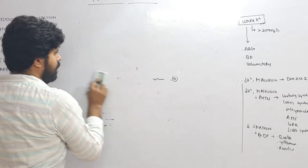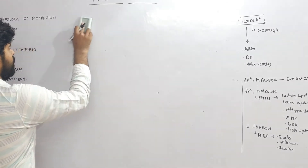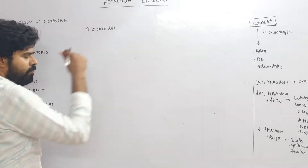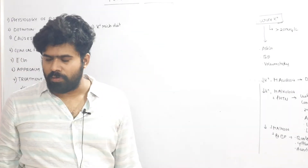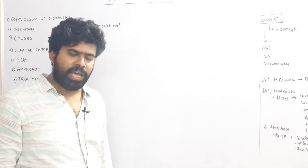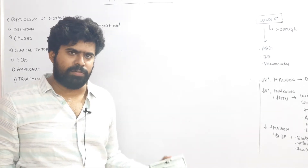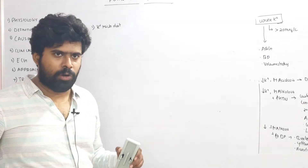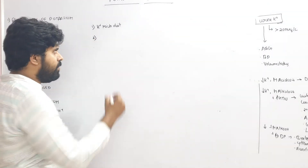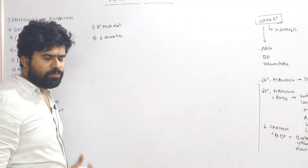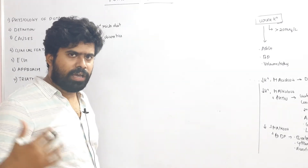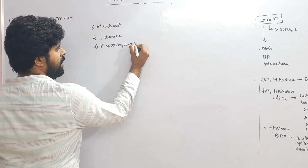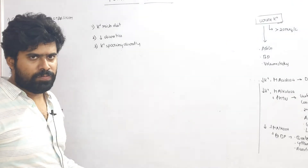Treatment of hypokalemia requires three things. First, a potassium-rich diet — bananas, coconut juice, tomatoes — this is appropriate when serum potassium is between 3.5 and 4 with no symptoms. Second, reduce the dose of diuretics — for example, reduce furosemide from 40 mg to 20 mg per day. Third, add potassium-sparing diuretics as add-on therapy.